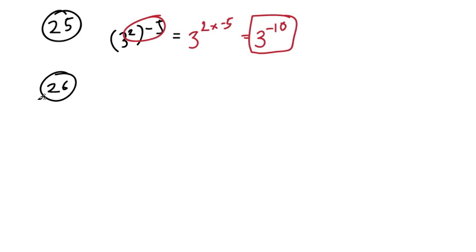26. That says which number line shows a solution set of 3n is greater than or equal to 6. So let's solve it. We have to get n on its own, so we've got to divide by 3.